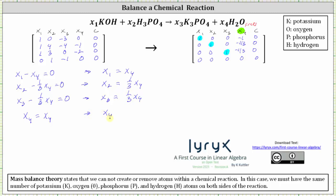Since x sub four can be anything, we introduce a parameter T and write all equations in terms of T. Setting x sub four equal to T, we get: x sub one equals T, x sub two equals one-third T, x sub three equals one-third T, and x sub four equals T. It is common to express the solution in terms of the free variable x sub four or in terms of the parameter T.